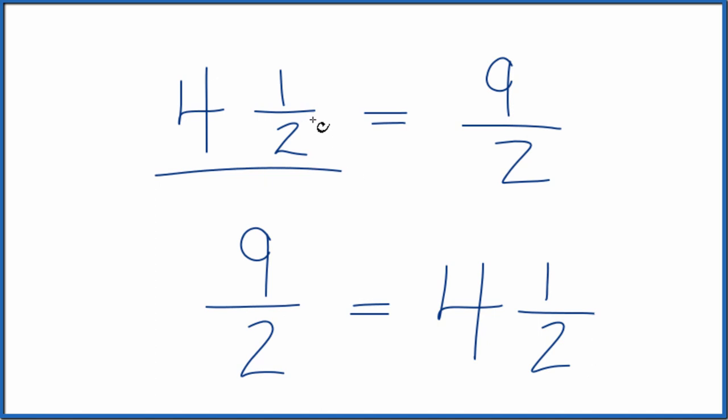That's what we started with. So we know we did this correctly. In answer to our question, the mixed number four and one half equals the improper fraction nine halves.